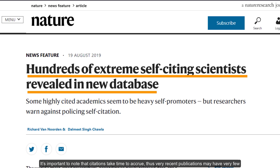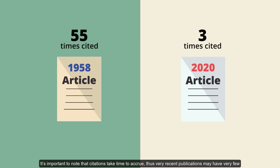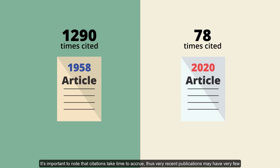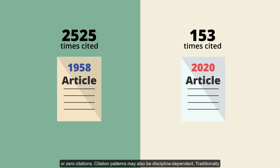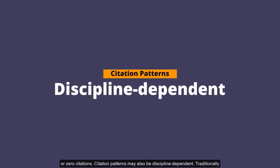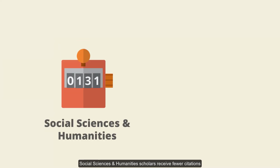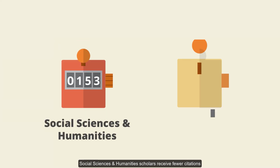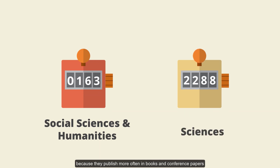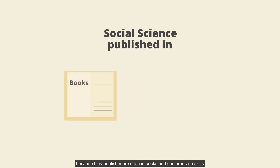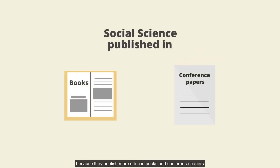It's important to note that citations take time to accrue. Thus, very recent publications may have very few or zero citations. Citation patterns may also be discipline-dependent. Traditionally, social sciences and humanities scholars receive fewer citations because they publish more often in books and conference papers.